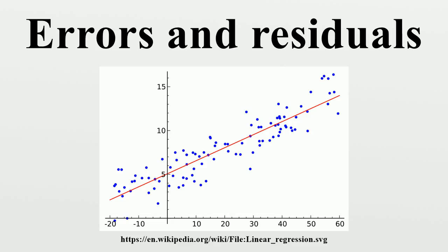In regression analysis, the distinction between errors and residuals is subtle and important, and leads to the concept of studentized residuals. Given an unobservable function that relates the independent variable to the dependent variable — say, a line — the deviations of the dependent variable observations from this function are the unobservable errors. If one runs a regression on some data, then the deviations of the dependent variable observations from the fitted function are the residuals. However, a terminological difference arises in the expression mean squared error. The mean squared error of a regression is a number computed from the sum of squares of the computed residuals, and not of the unobservable errors.